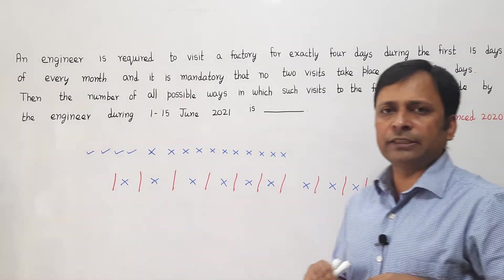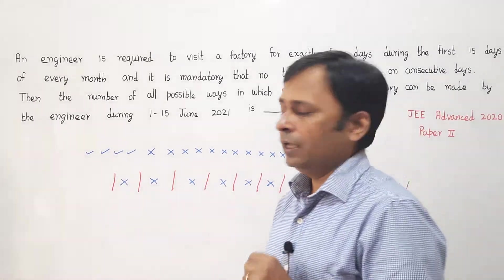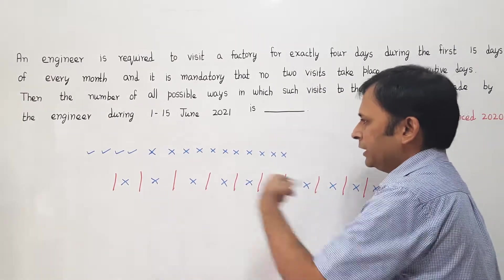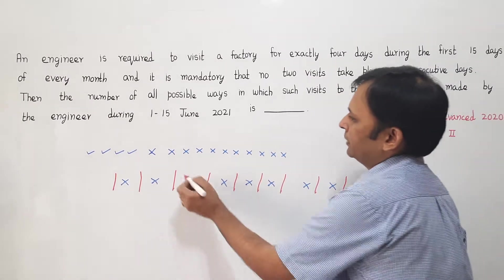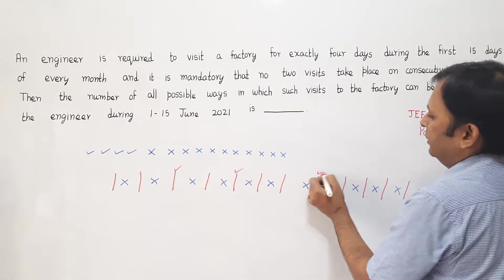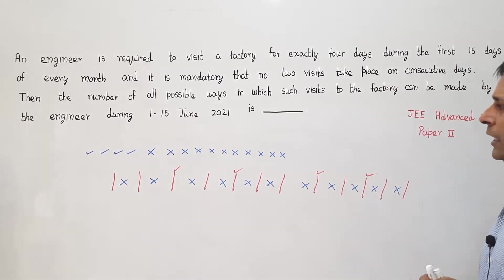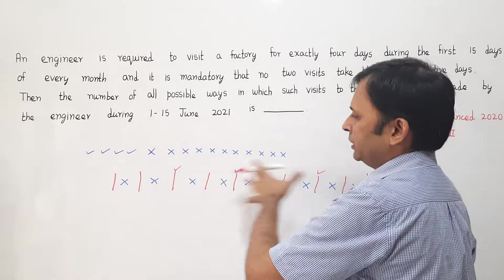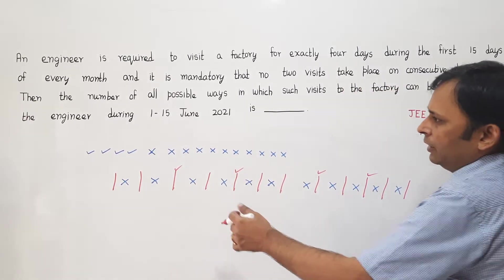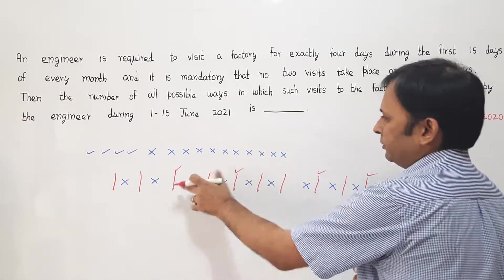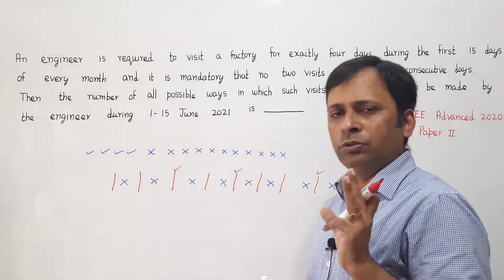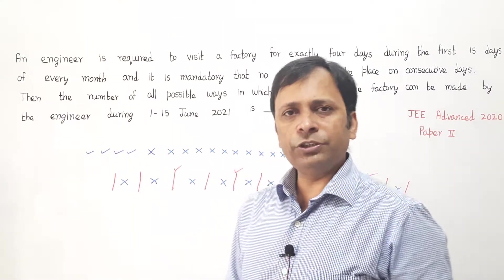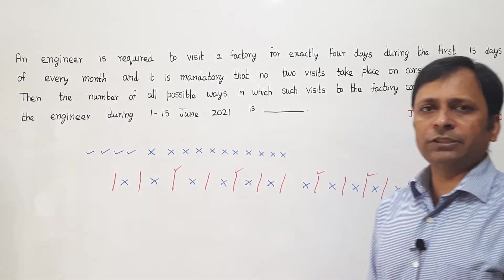Now if I am doing it like this, I can choose any of the 4 ways. Suppose if I am placing a tick over here, here, here, and here. You can see that irrespective of the position where I'm putting 4 ticks, between any 2 ticks you will have minimum 1 cross. That means no 2 ticks are consecutive. So my requirement is met.